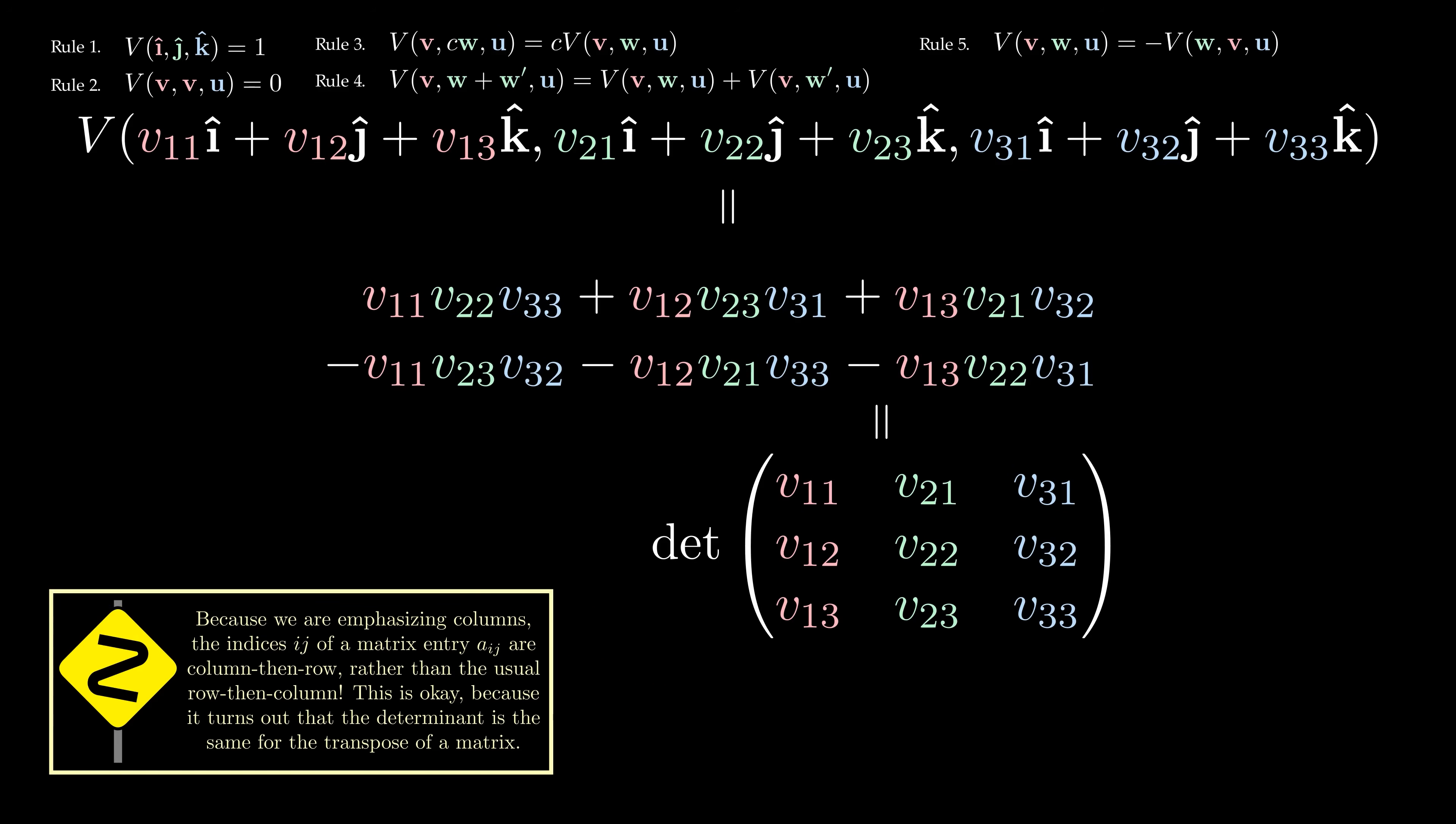Now this is the usual formula for the 3×3 determinant, though I need to issue a strong warning here. Normally, matrix entries have subscripts corresponding to row, then column, but in this video, I'm emphasizing column vectors, so all of my matrix subscripts will be column, then row instead. This turns out to not really matter, but do be careful if you're comparing this to a textbook.